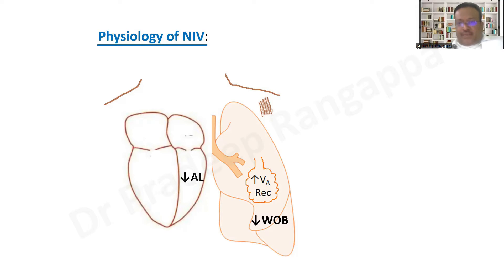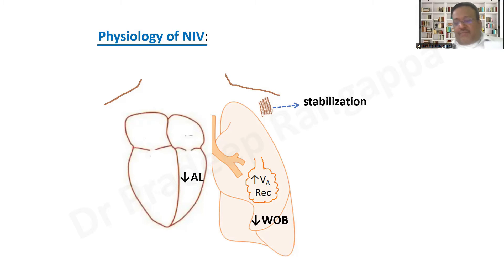The third element is it significantly reduces the work of breathing and improves oxygenation. Most importantly, NIV has a significant effect on heart failure by reducing afterload — something HFNO fails to do. HFNO is not a modality that reduces afterload on the heart. HFNO is also not helpful in stabilizing the chest wall, for example in trauma with a flail chest, or in conditions of reduced minute ventilation due to neuromuscular or respiratory muscle weakness.